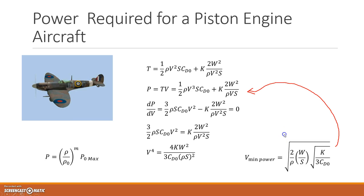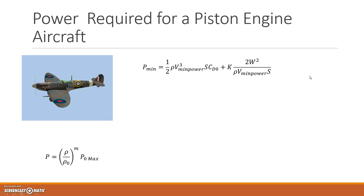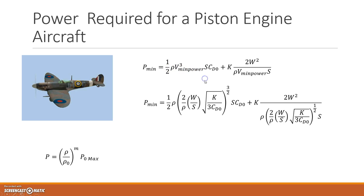I'm going to take that velocity, and I'm going to place it back in here for V to determine what the minimum power is. So the minimum power is, V is now going to be replaced by velocity for minimum power, and there is the velocity for minimum power.